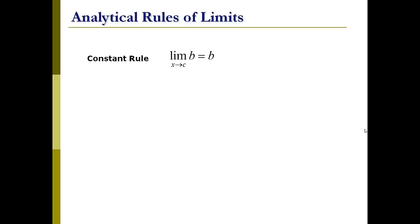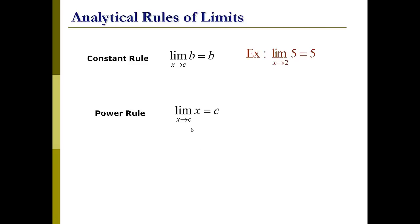We'll start with the constant rule. The limit of some constant b as x approaches c is equal to that constant b. That is a horizontal line at y equals b, so it's going to be b no matter what the value of x is. For example, the limit of 5 as x approaches 2 is just 5. Now we have the power rule applied to x to the first power: the limit of x as x approaches c is equal to c. This is a linear function. For example, the limit of x as x approaches 2 is 2.